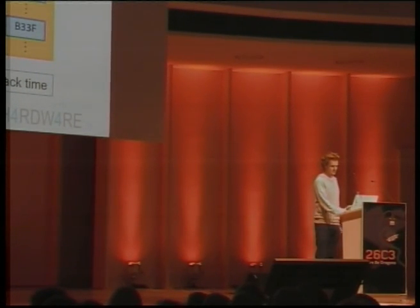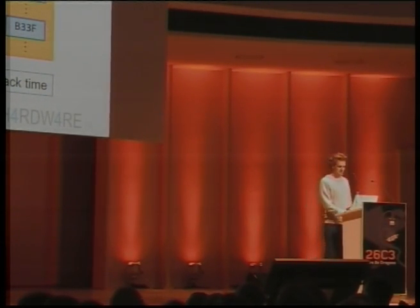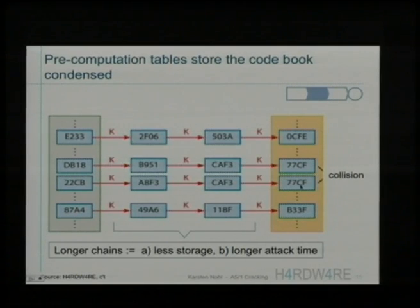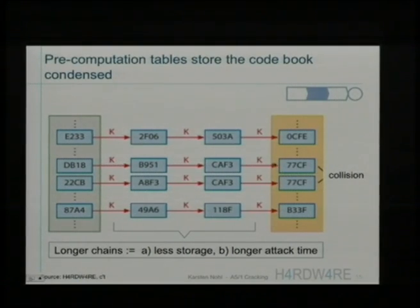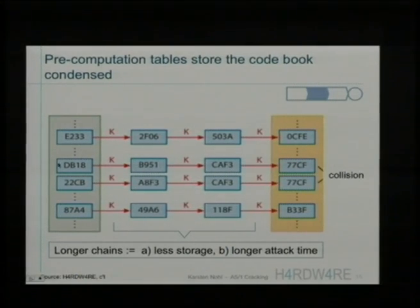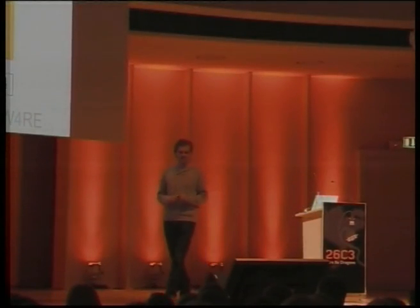We do this for many chains, storing only the first and last values shown in yellow and green in this picture. After computing a very large table, to crack something we observe on the air — say a given A5/1 output — we apply A5/1 to this number and arrive at something we can't find in the yellow column, so we apply it again. Now we find a match in the yellow table on our hard disk or USB stick, and with some probability the key we're looking for is in that chain. We start at the beginning and compute until we hit the value we saw on the air; the value just before that is the secret key.